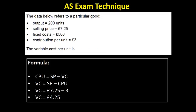Okay. So final question. The data below refers to a particular good. The variable cost per unit is, okay, so I need to work out variable cost per unit. As long as I know my formulas, I can look at what they've given me here. They've given me contribution per unit. They've given me selling price. Now I know that if I've got the selling price and the variable costs, I can work out the contribution per unit. So presumably, if I've got this information, I'll be able to work the formula around and work out variable costs. Okay. I don't need the output. I don't need the fixed costs. They're kind of red herrings in this question.